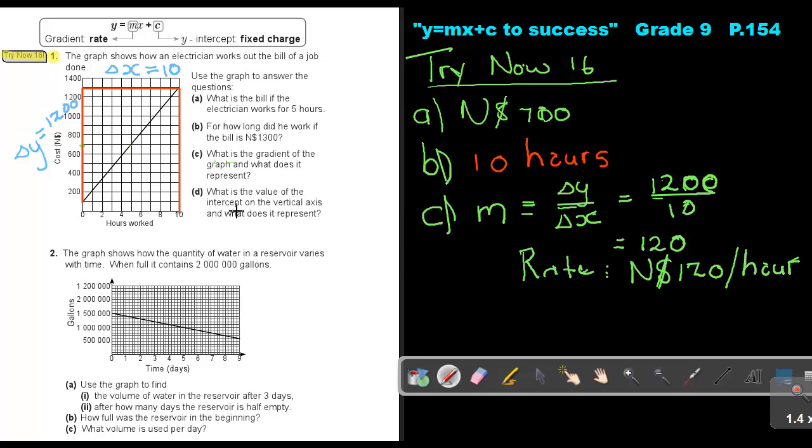So what is the value of the intercept on the vertical axis and what does it represent? So if I look at that, what is that value? That value is going to be 100. So if I look at that value, that's the fixed charge. And that is what he's going to, just for calling him out, you are going to pay that $100. And then for every hour that he works on, what was it, the electrician, for every hour he works, he's going to charge you $120. Thank you very much.